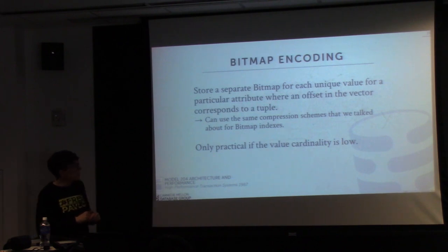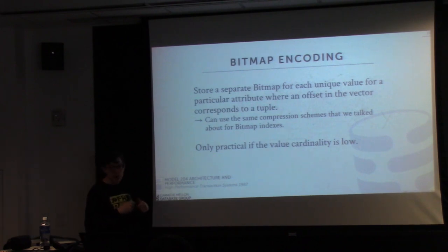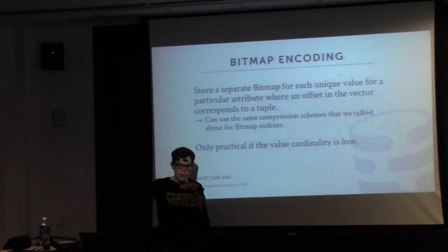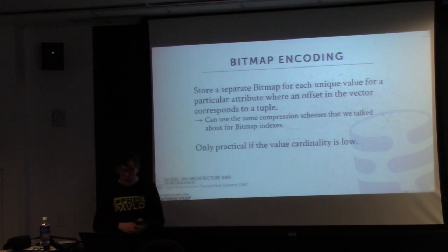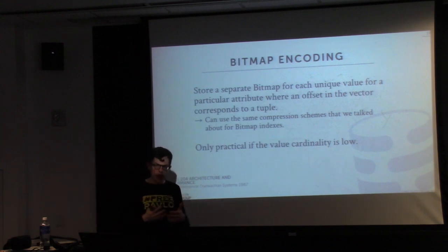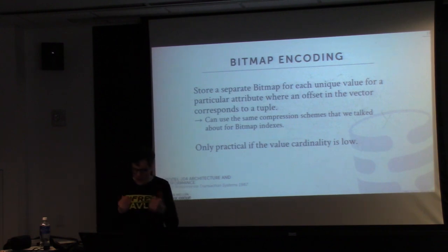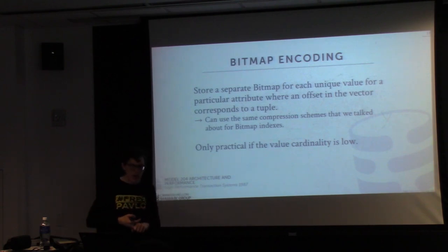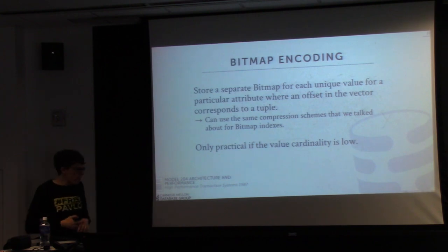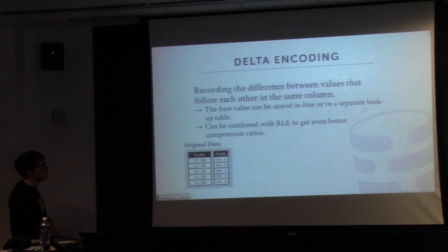Bitmap encoding, discussed before, creates a separate bitmap for every unique value in an attribute, indicating which tuples at which offsets have that value. This only works when cardinality is low. This is something the database administrator would have to specify — the database system won't automatically tell you whether bitmap encoding is appropriate for a given column.